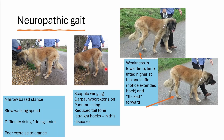We had reduced tail tone in this dog. We also have very straight hocks, quite characteristic of this particular disease, which many of you will have recognized as Leonberger polyneuropathy. The weakness is more apparent distally, which is very common in neuropathy. We get this hitch of the limb — it's lifted higher at the hip and the stifle, and then they flick it forward. Very characteristic for this gait.